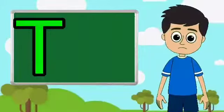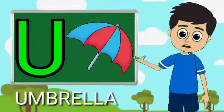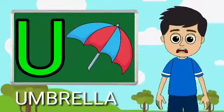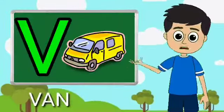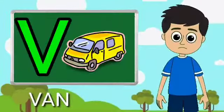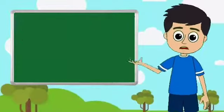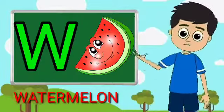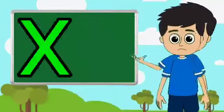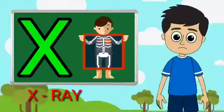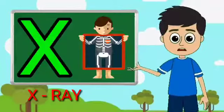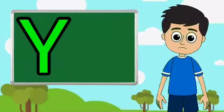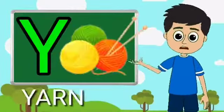U for umbrella, W for watermelon, X for extra, Y for yarn.